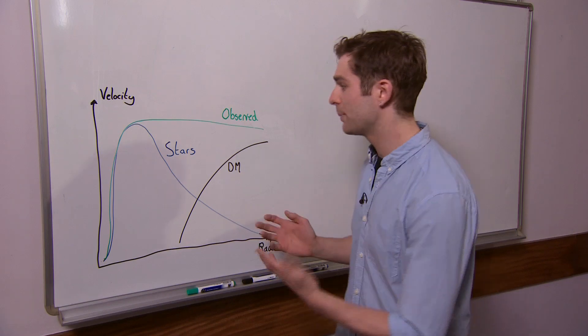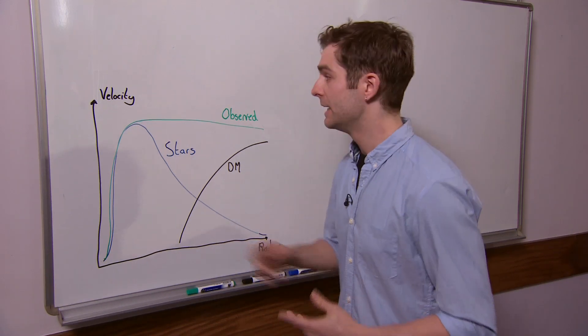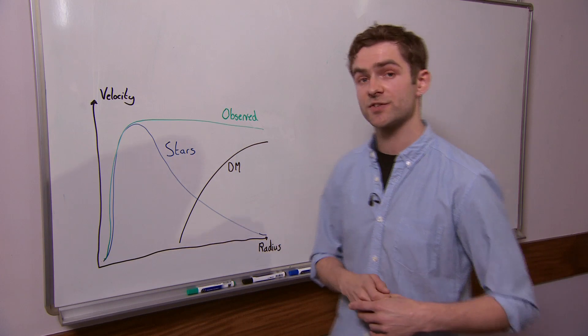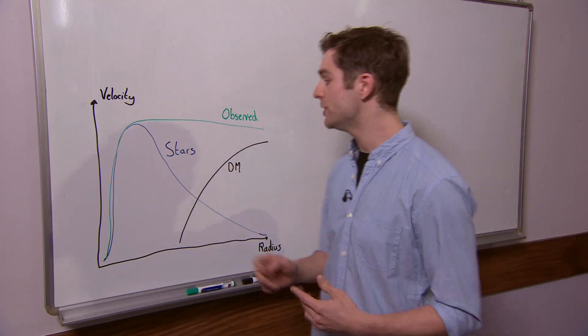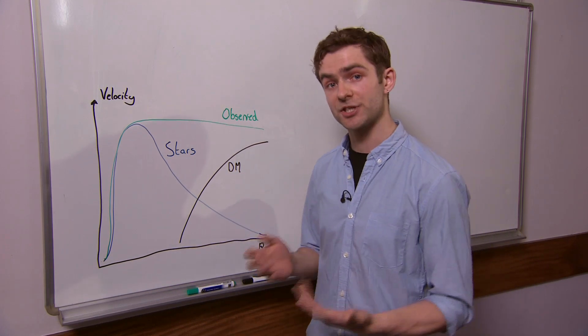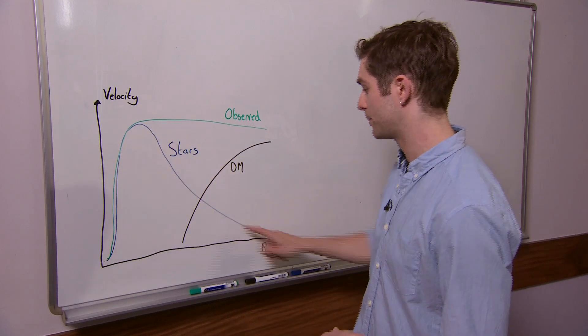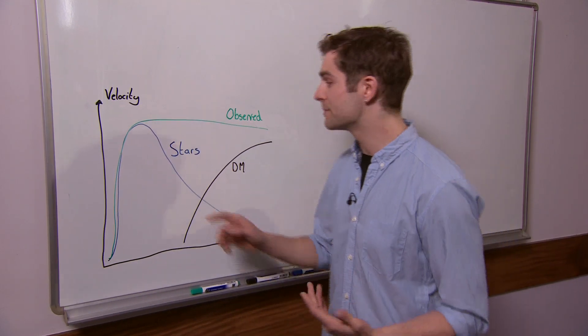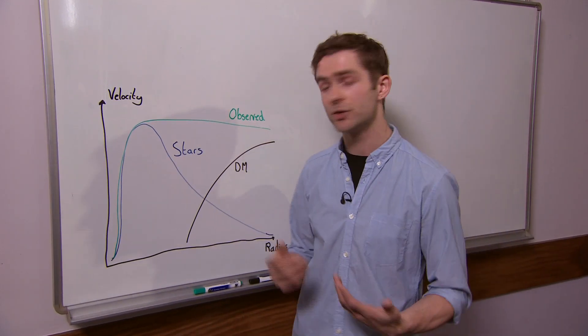Here's an example of how we predict dark matter in an individual galaxy. Here we plot velocity against distance from the center of the galaxy. Now using what we know about gravity and just the stars that we see, we would predict this blue curve here. However, what we observe is this green curve, a flat rotation curve.